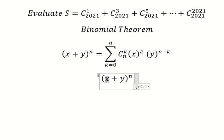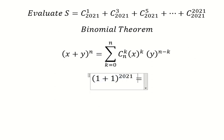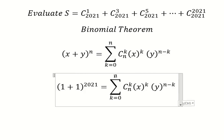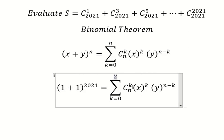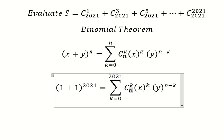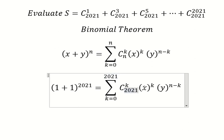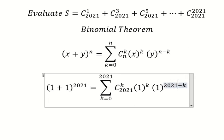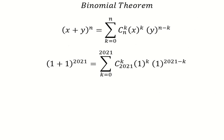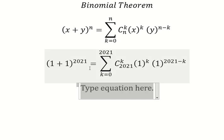Now if I put s equals to 1, y equals to 1, and n equals to 2021, we put those values in here. So we have 2021 here, 1 here, and 1 here. Let's say if I put k equals to 0 in here, so that should be like this.